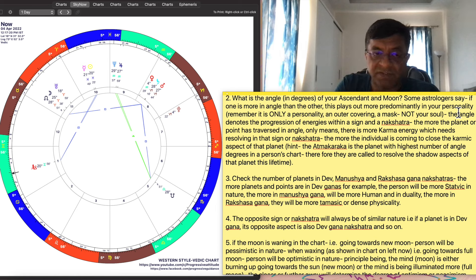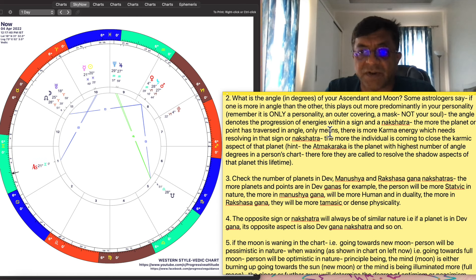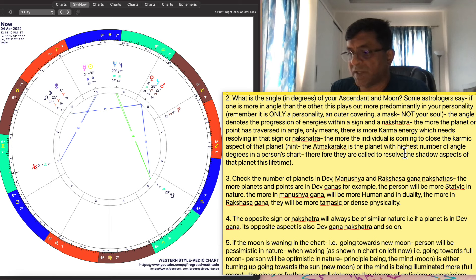Remember, it's only a personality and outer covering, a mask. It's not your soul. The angle denotes the progression of energies within a sign or nakshatra. So the higher the angle, in which case which is the ascendant in Punarvasu, it's almost about to finish. You can see that angle over there is just about to finish Punarvasu. The angle denotes the progression of energies. Means the soul has already covered this. It's pretty much seen all the Punarvasu, it's just in a finishing stage of it. The more angle is traversed only means there is more karmic energy which needs resolving to that sign or nakshatra. So this person who is born now is finishing up Punarvasu as he goes into more of Ardra nakshatra. There is a hint here, in the Jaimini system, Atmakaraka is a planet with the highest angle among all the other planets and points in the chart. That becomes Atmakaraka. It's not points. Jaimini system uses only solid planets, not Rahu, Ketu or North or South node of the Moon. Atmakaraka is one where the person is trying to resolve the shadow aspects of any planet. Every planet has a shadow aspect.